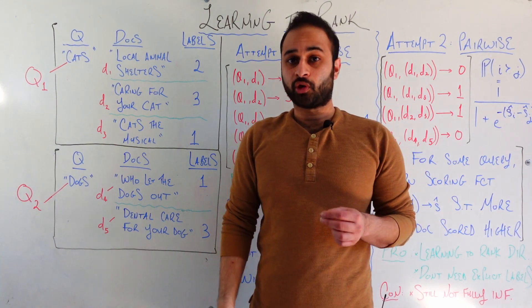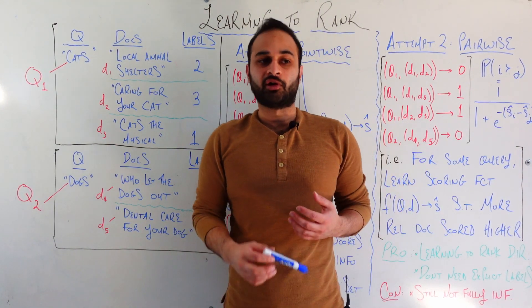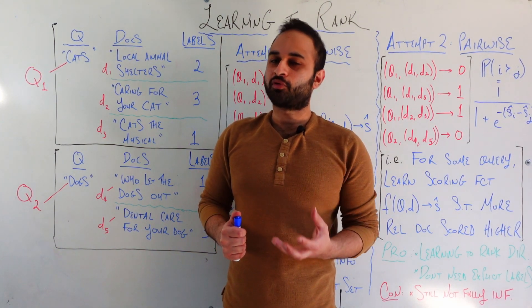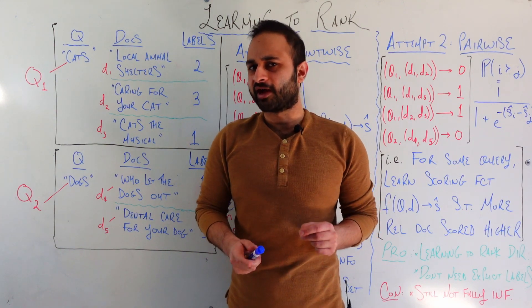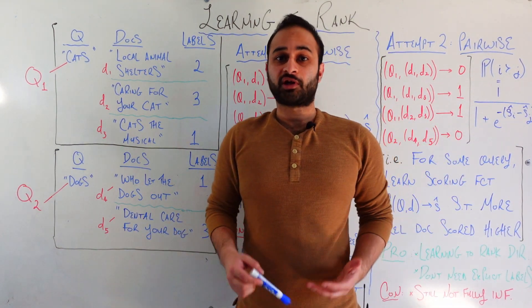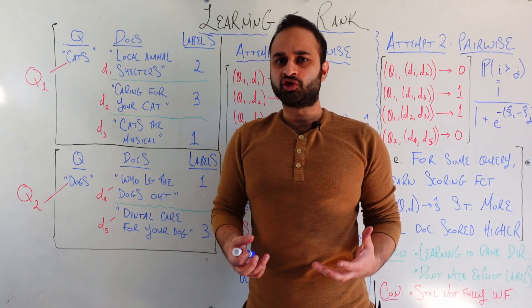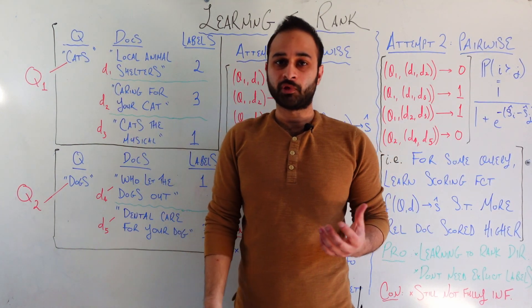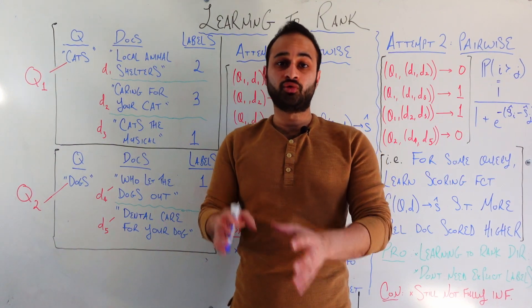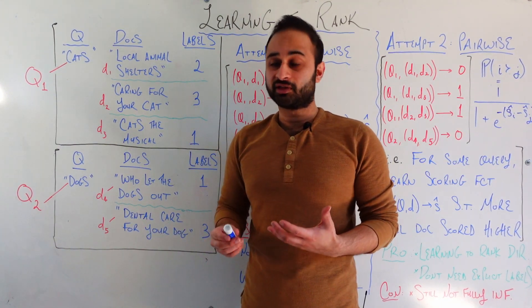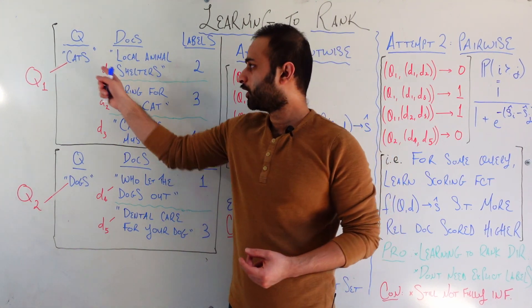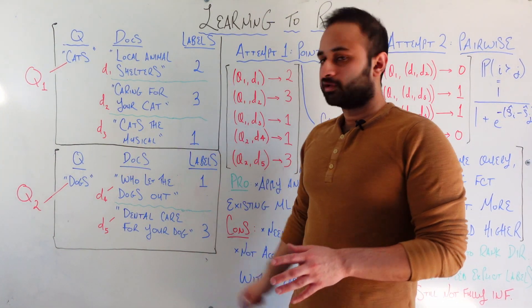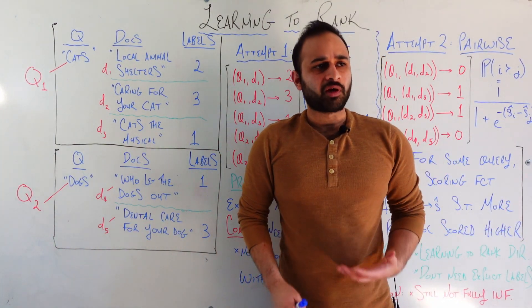So we have these three possible results for this one query, and the last part of the story for this query is the labels. The labels in learning to rank have a very special place because they are interesting, prone to a lot of bias. First of all, what are the labels? The labels are simply some kind of score, some kind of gauge about how relevant each of these documents is for this particular query.